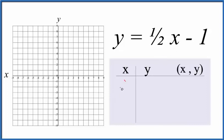Let's start out with zero. That's always a good one to start with for x. One-half times zero, that's zero. Zero minus one, that's negative one.